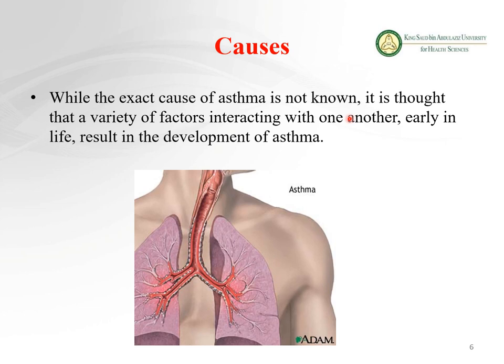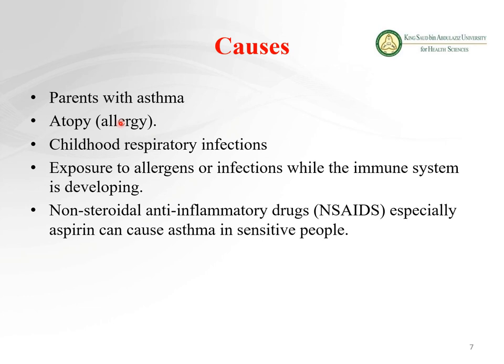The exact cause of asthma is not known. It is thought to involve a variety of factors interacting with one another early in life, resulting in the development of asthma. Contributing factors include parents with asthma — indicating a genetic association — and atopy or allergy, because allergy can trigger an asthmatic attack causing contraction of the bronchioles.